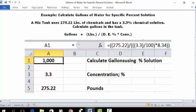The formula is: gallons equals pounds divided by the decimal equivalent of percentage (which is your concentration) times the conversion. Let's see how we do this in an Excel spreadsheet.